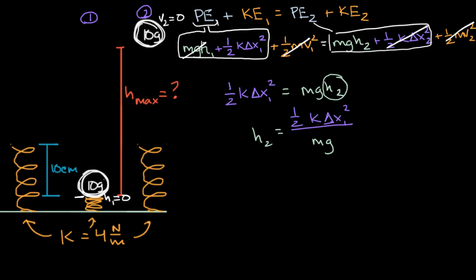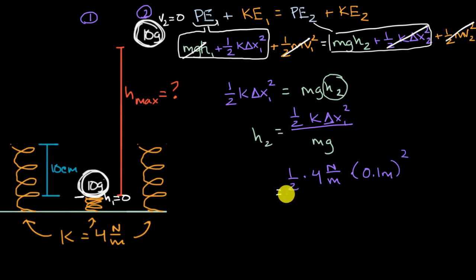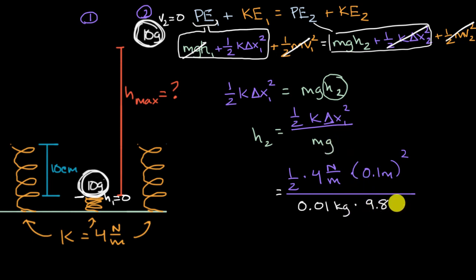Now we plug in the values with consistent units. The spring constant is four newtons per meter. The compression is 10 centimeters, which we convert to 0.1 meters. The mass is 10 grams, which is 0.01 kilograms. G is 9.8 meters per second squared. Calculating this gives approximately 0.2 meters.